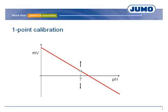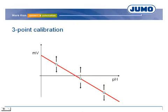Two further calibration methods are available. The one-point calibration is used, for example, in applications with ultra-pure water, using a measuring solution and a hand-held measuring device. The three-point calibration is used for measuring in both acid and alkaline media.